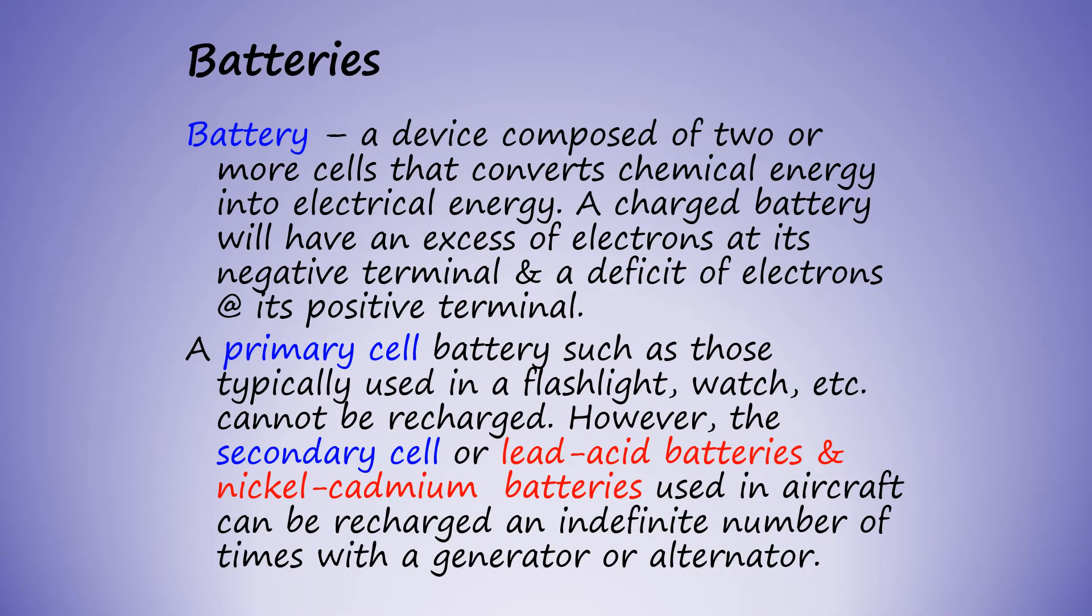Batteries convert chemical energy into electrical energy. A charged battery will have an excess of electrons at its negative terminal and an electron deficit or positively charged ions at its positive terminal. There are two main types of aircraft batteries: lead acid and nickel cadmium. Both types can be repeatedly recharged via the aircraft alternator.